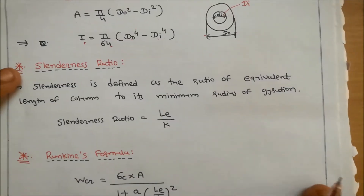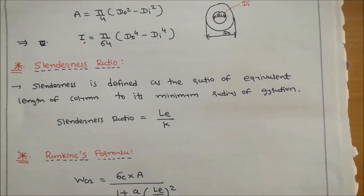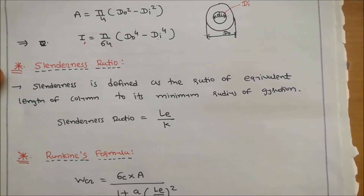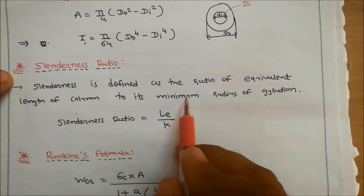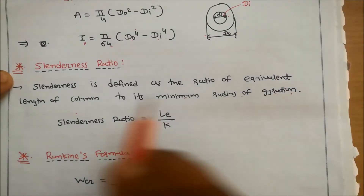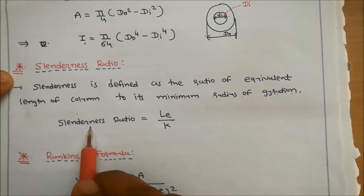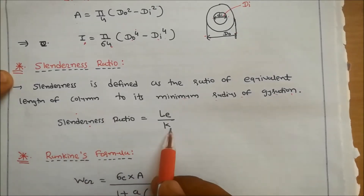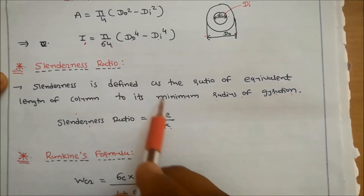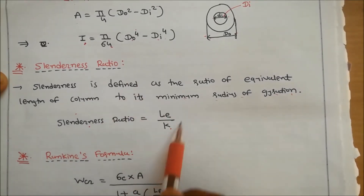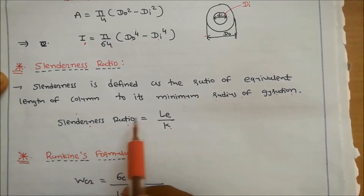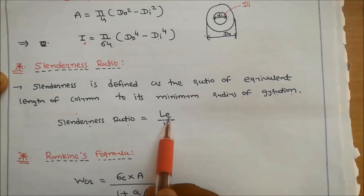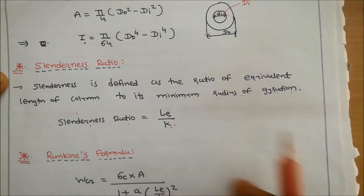The next equation is slenderness ratio, defined as the ratio of equivalent length of the column to its minimum radius of gyration. The slenderness ratio equation is Le / K.